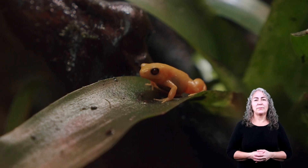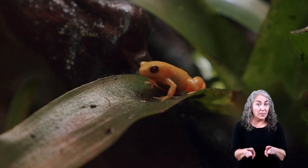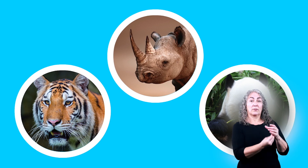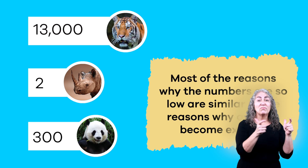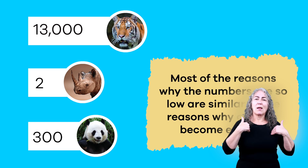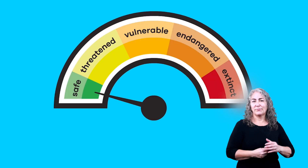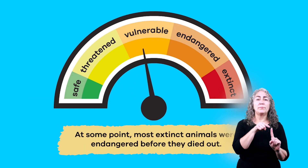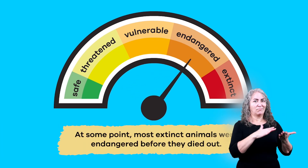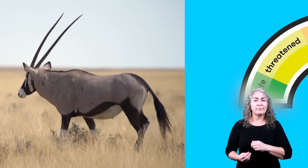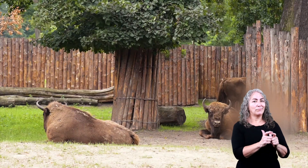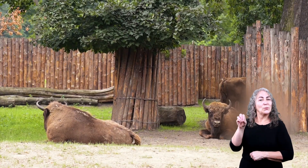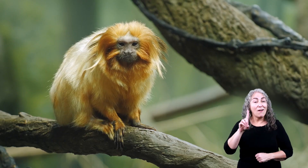Today there are many animals that are in danger of becoming extinct, mostly due to human causes, and when this happens the animals are considered endangered. Endangered animals have super low populations, and most of the reasons why the numbers are so low are similar to the reasons why animals become extinct — which makes sense, because at some point most extinct animals were endangered before they died out. Today some animals are so endangered that they can only be found in a zoo or animal preserve, and not in the wild.